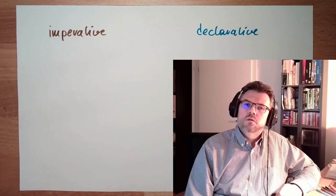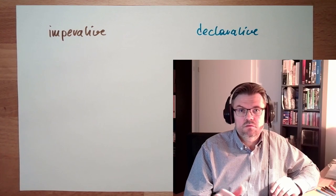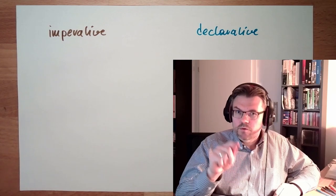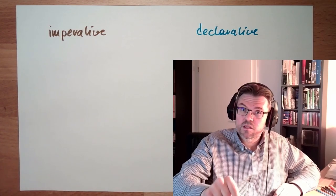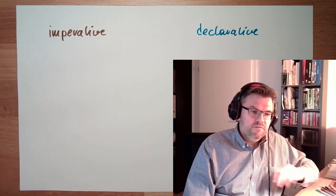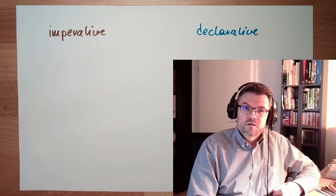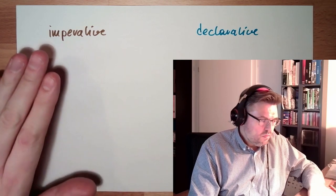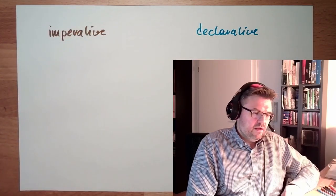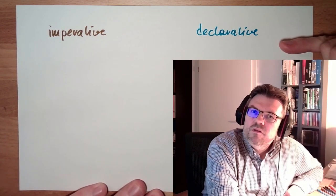So with declarative, I describe what I want to have, and with imperative, I describe the steps one by one. One example of declarative would be SQL. I describe: I want to have a table which is that big and has these things inside. What steps, what commands are necessary? I don't care. I want to have this data out — I just describe which data I want to have, and whatever is necessary, let's do it.